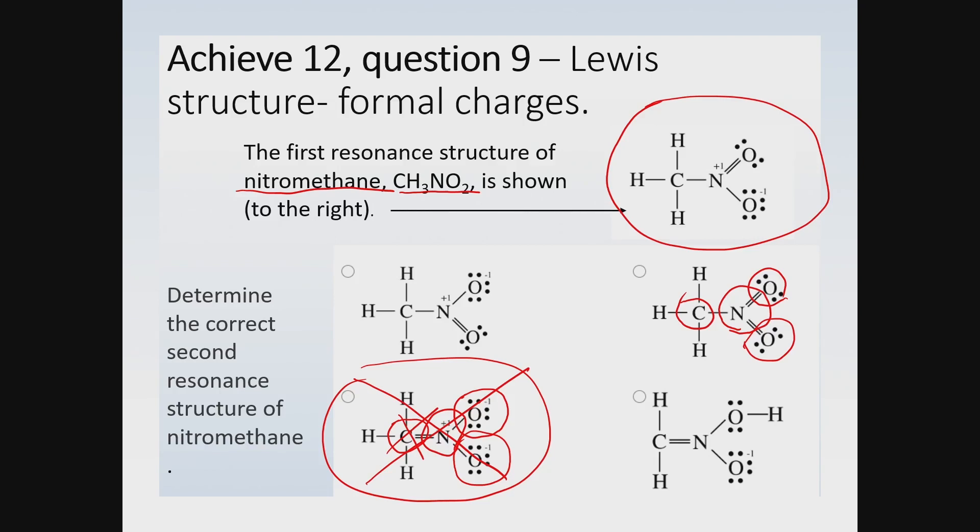There's a single bond leaving the nitrogen going to the carbon, and then there's a double bond leaving the nitrogen going to each oxygen. Again, each bond has two electrons, so there's a total of 10 electrons there. That is not permitted. So we're going to put a big X in that one too.